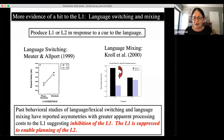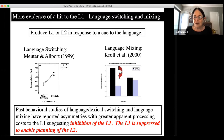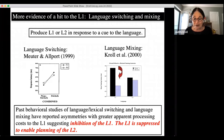So we temporarily reversed the dominance of their two languages within the experiment. It suggests that the native or dominant language may be suppressed to enable the planning of the second language. In a similar study with Mandarin-English speakers, we asked participants to name the same pictures in both languages. Some named first in Mandarin (L1) then English (L2); others did the reverse. If you name the same thing twice, you might expect facilitation — and we asked whether this holds across languages.